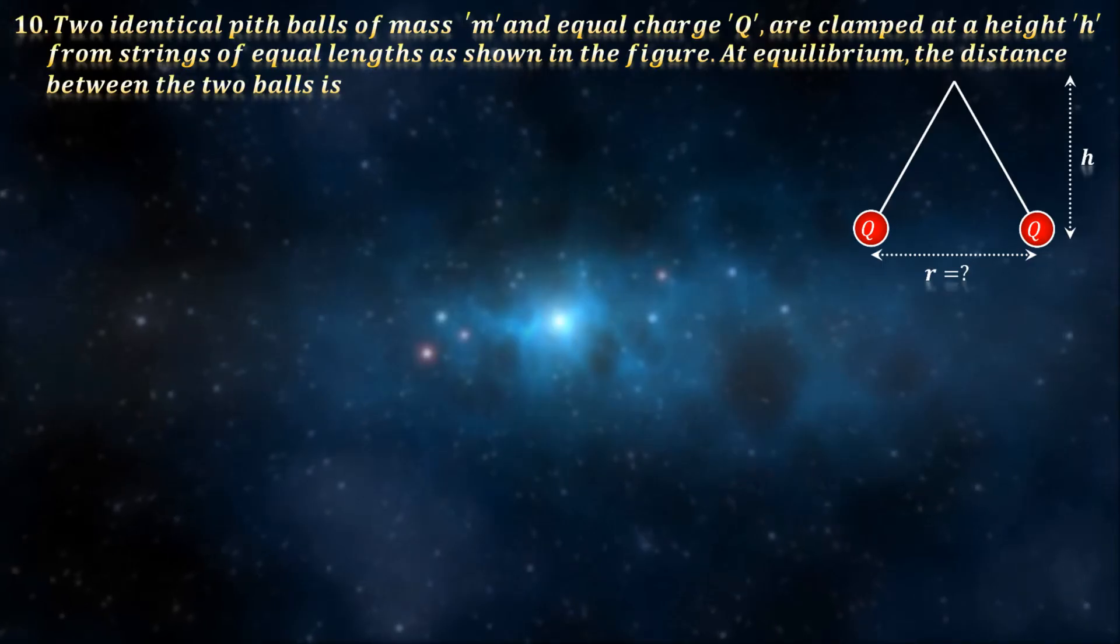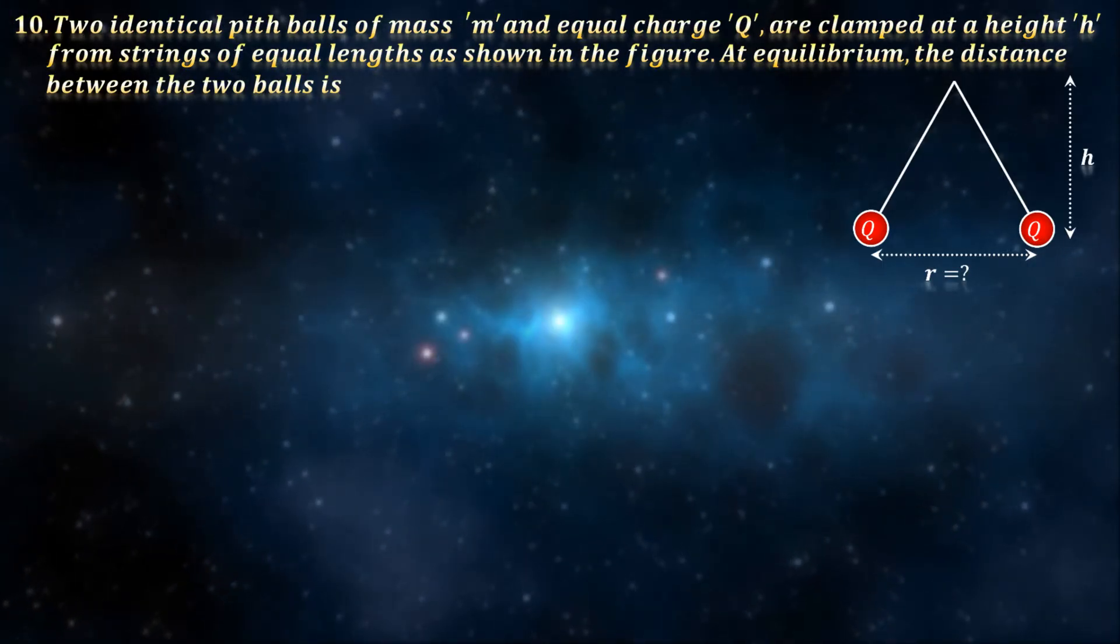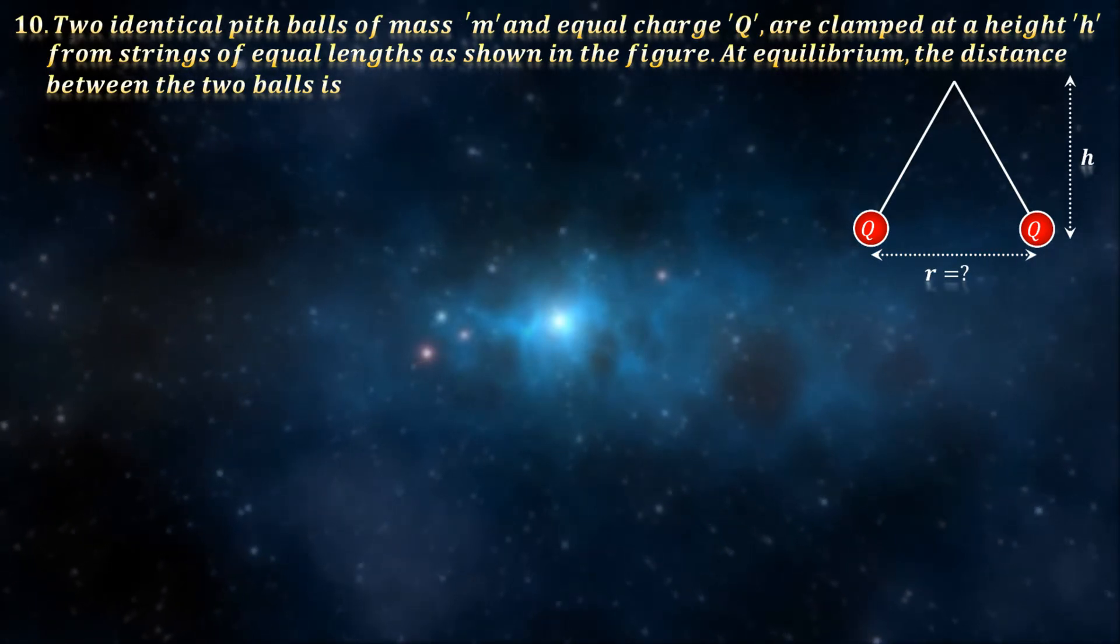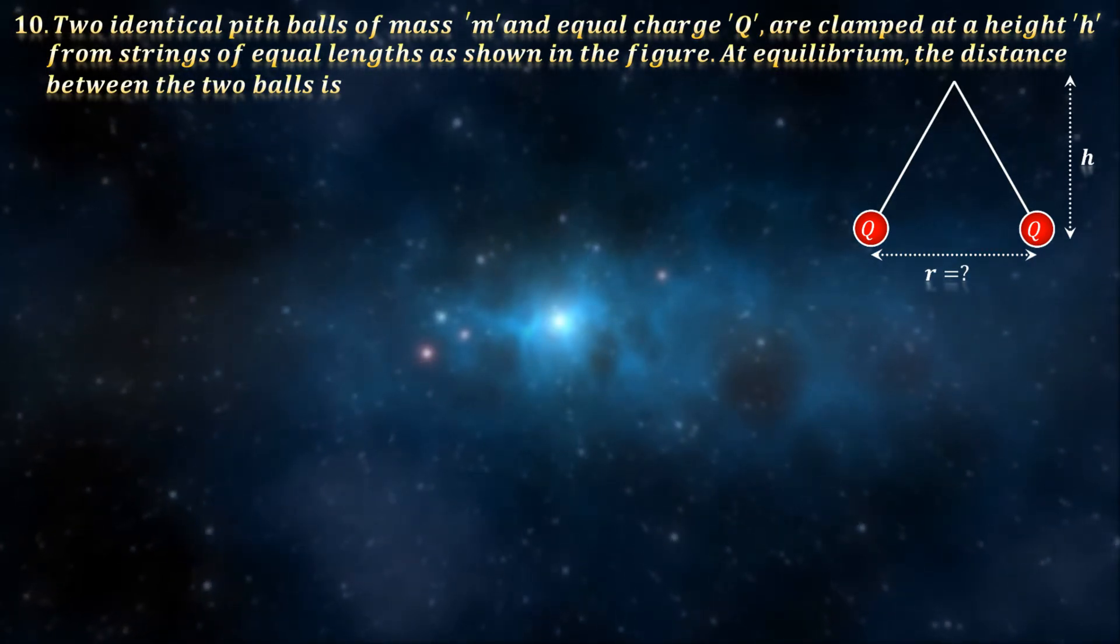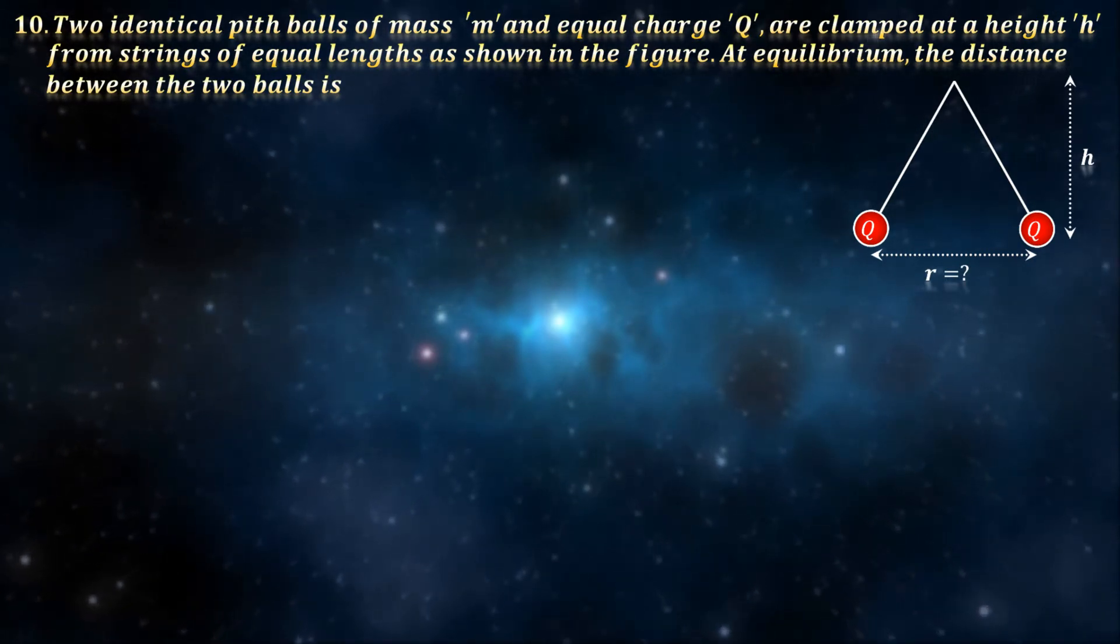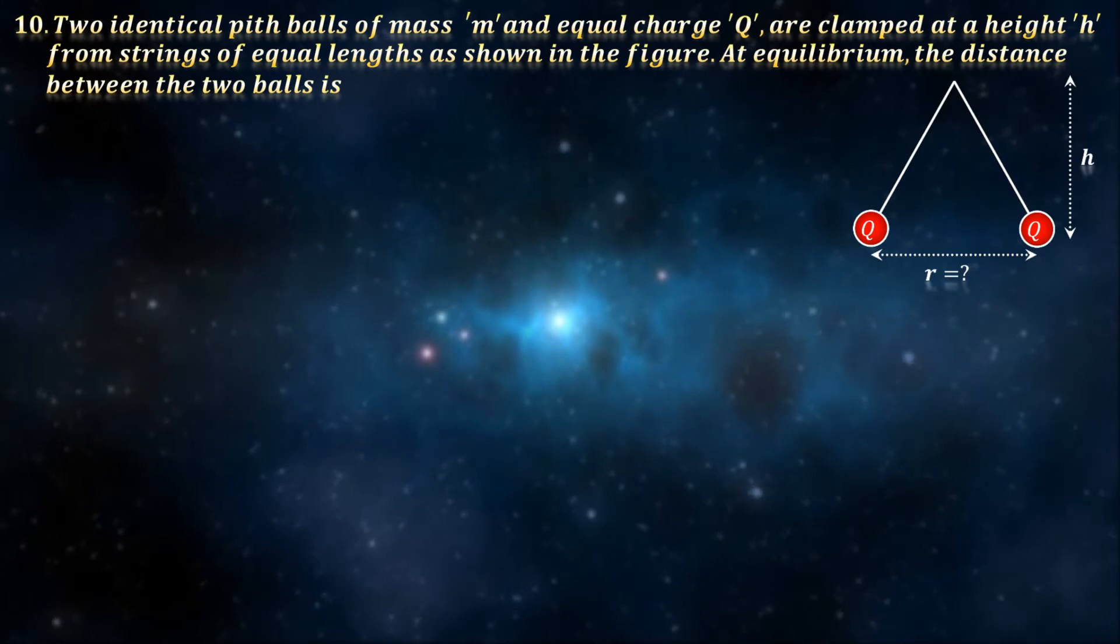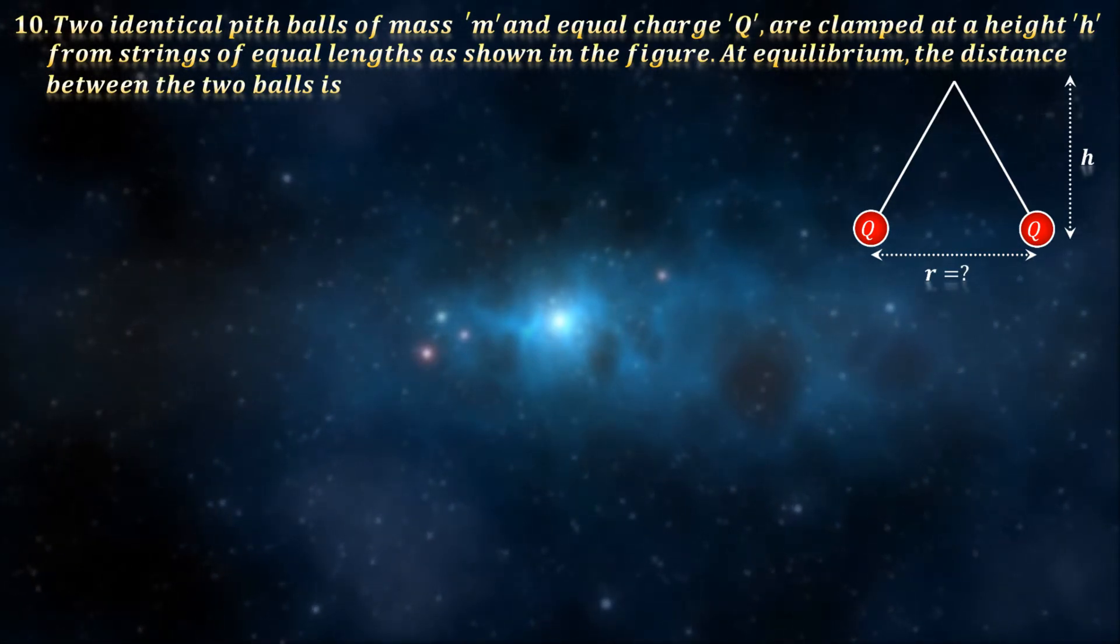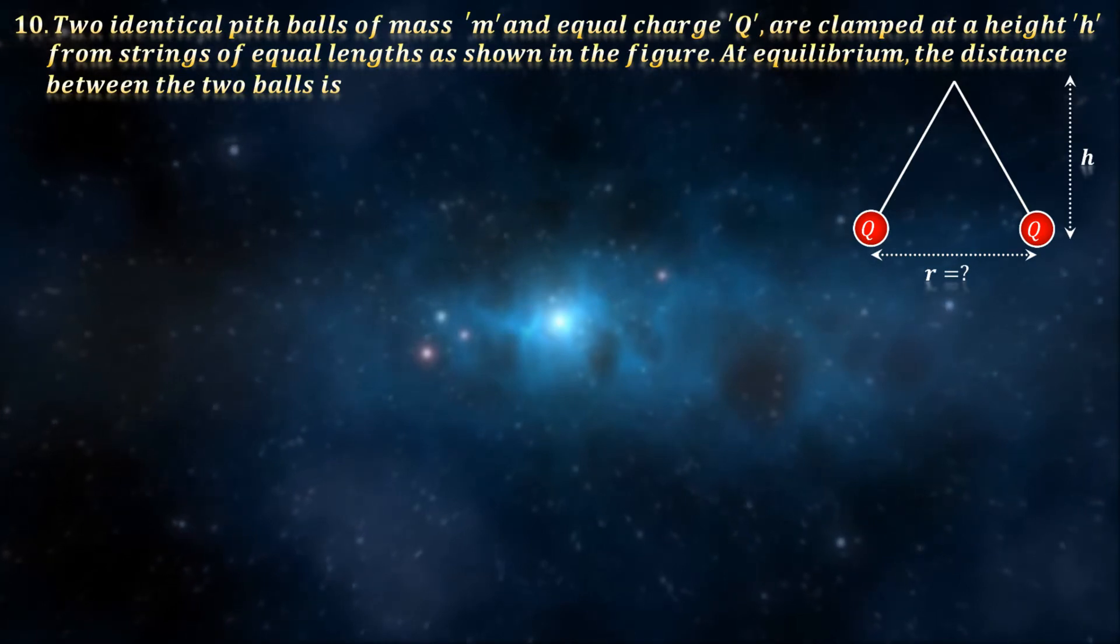Next one is actually quite a similar problem. Here, instead of giving us the angle between the threads, they have given us the height at which the threads are clamped. And instead of calculating q, we are asked to calculate r. Now, I will solve this one, but it would be a great idea to try and do this yourself first.